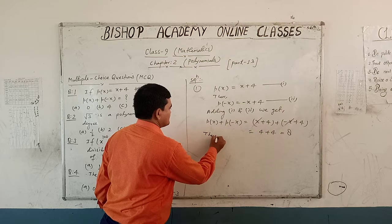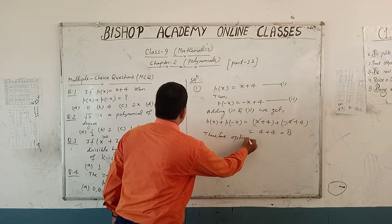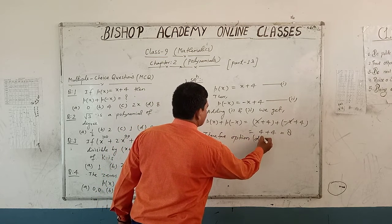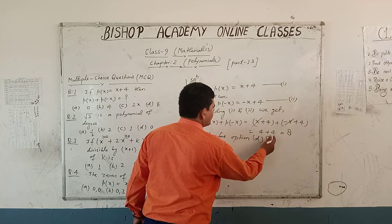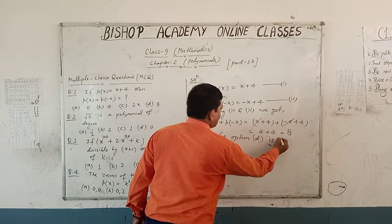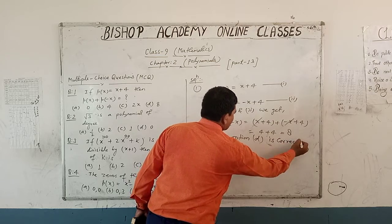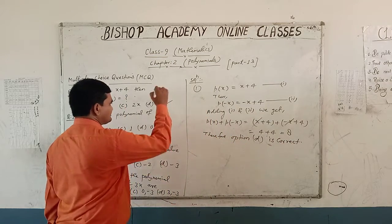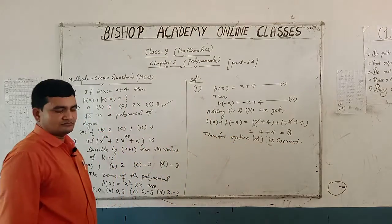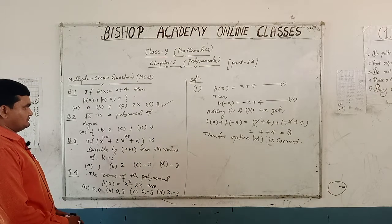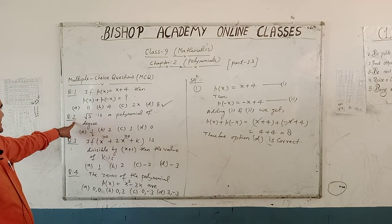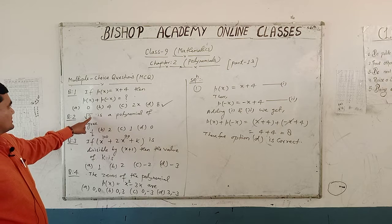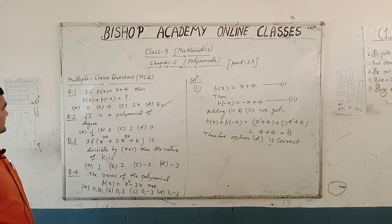In option number D, the value of P(x) plus P(-x) is 8. Therefore option D is correct.